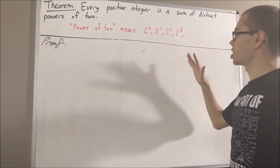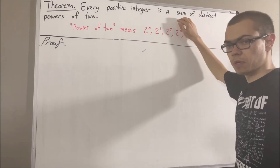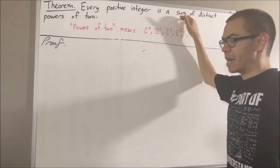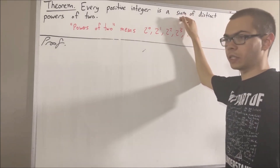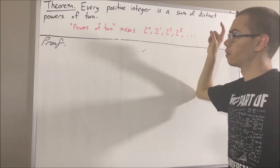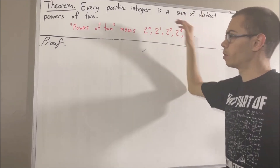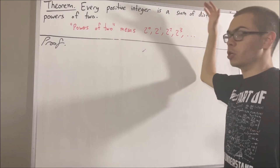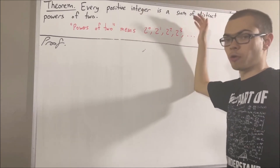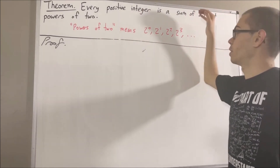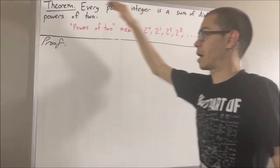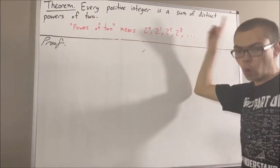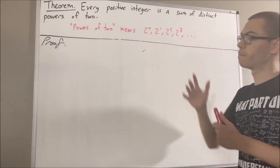In addition, when we say sum, the sum may contain only one term. For example, the positive integer 16 is equal to two to the power of four. So that would be a sum of distinct powers of two — in that case, we only have one power of two in that sum.